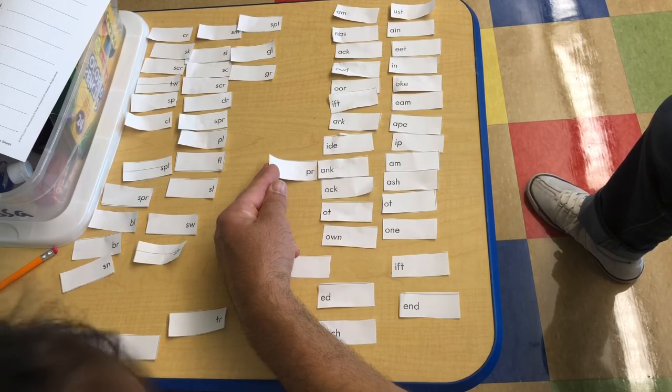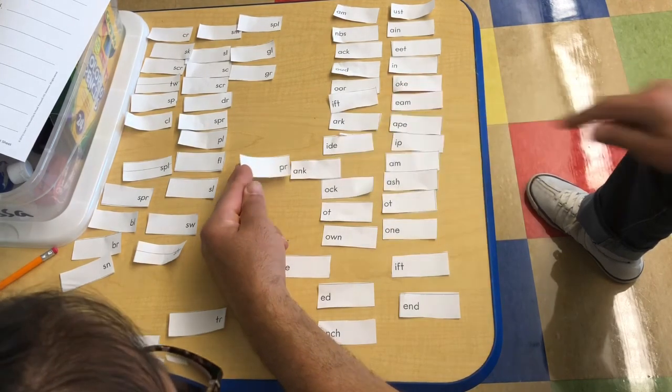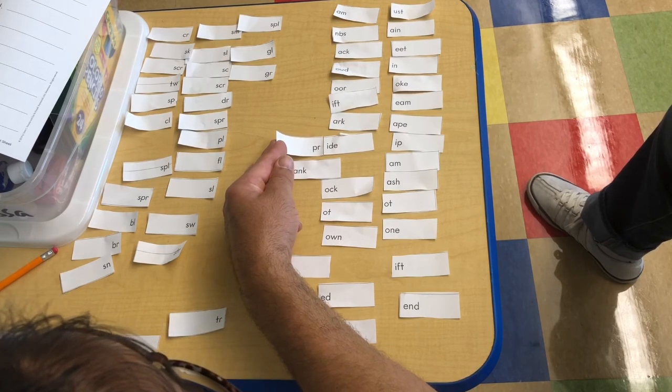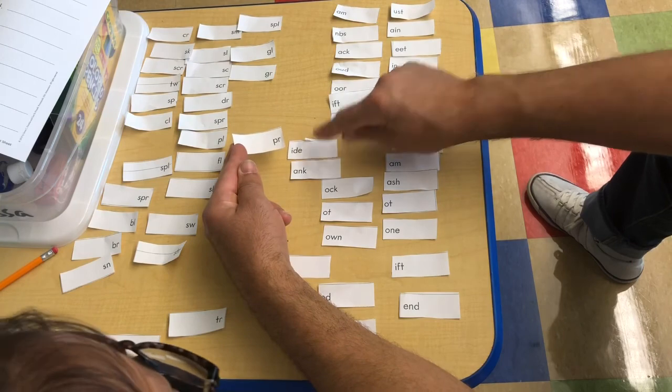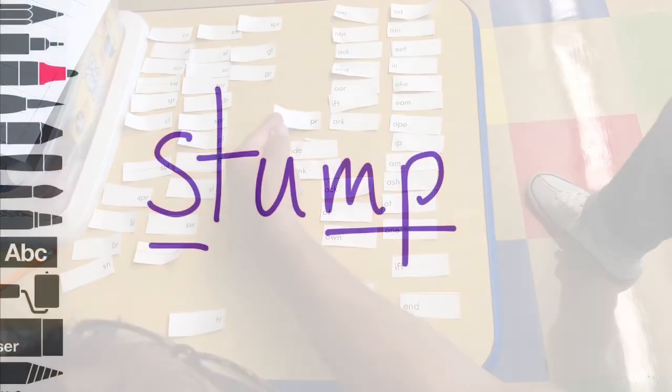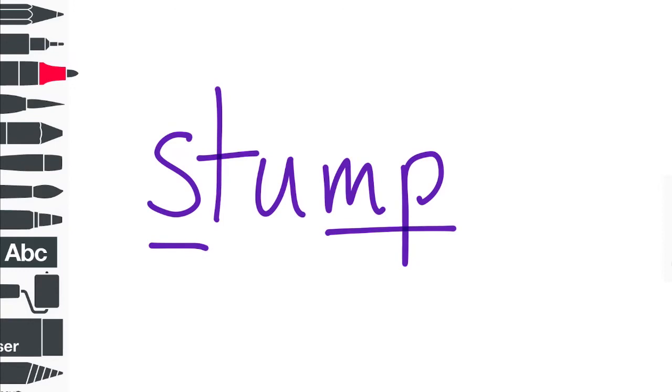PRANK. Is that a word? Yeah. Yeah, so we'll pull that out. How about this one? There are consonant clusters at the beginnings of words, and some words have consonant clusters at the end.